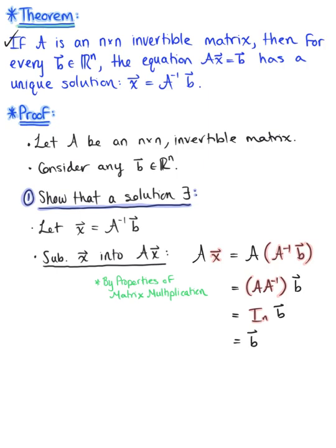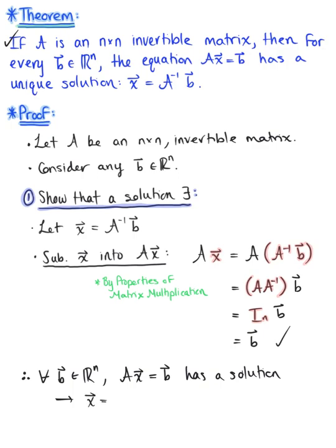We did it! We have completed the first part of our proof and shown that for all vector b in Rn, the non-homogeneous equation matrix A times vector x equals vector b has a solution. That solution is vector x defined as the inverse of matrix A multiplied by vector b.